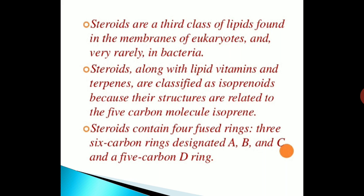So steroids are a third class of lipids found in the membranes of eukaryotes and very rarely in bacteria. Steroids along with lipid vitamins and terpenes are classified as isoprenoids because their structures are related to 5 carbon molecule isoprene.